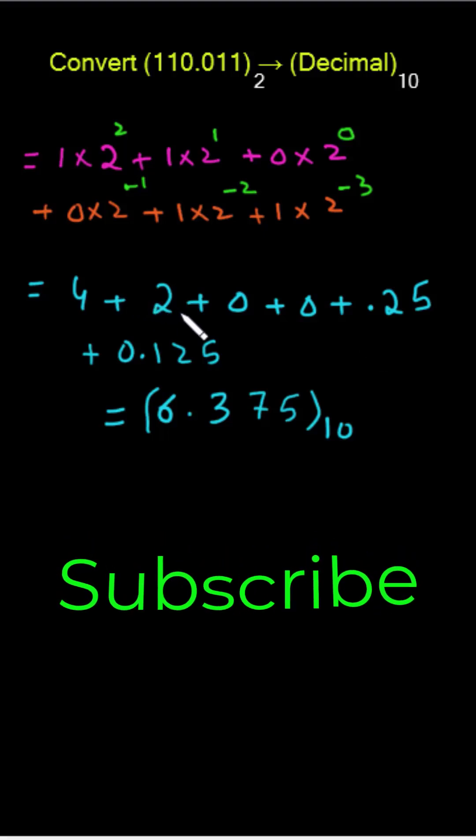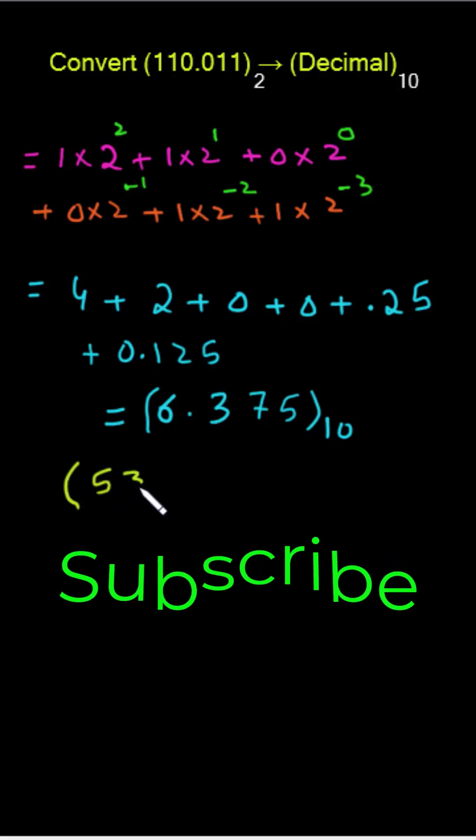Similarly, a number expressed in any base—consider base r—can be converted to its equivalent decimal by multiplying each coefficient with the corresponding power of the base and adding. Let me take another example: (5324.01)₆.